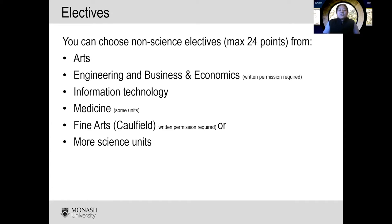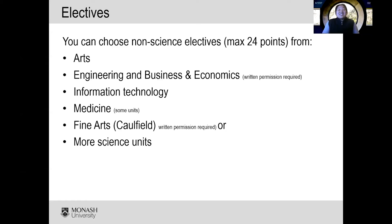In terms of electives, you can choose a maximum of 24 points — four units — from areas outside of science. This can include units from Arts, where many students choose a language or humanities unit, as well as Engineering, Business and Economics units, IT units, and some Medicine units. Fine Arts units based at the Caulfield campus are also available. Alternatively, you can fill your electives with more science units — because you can never have too much science.